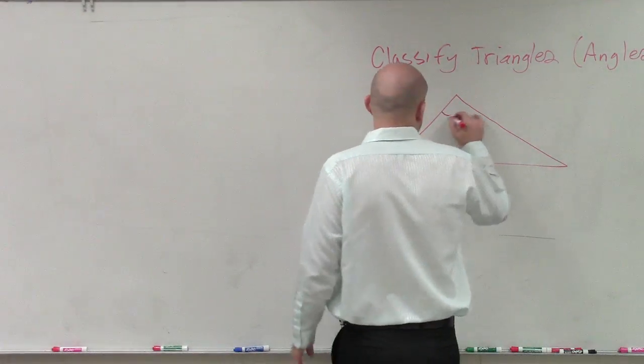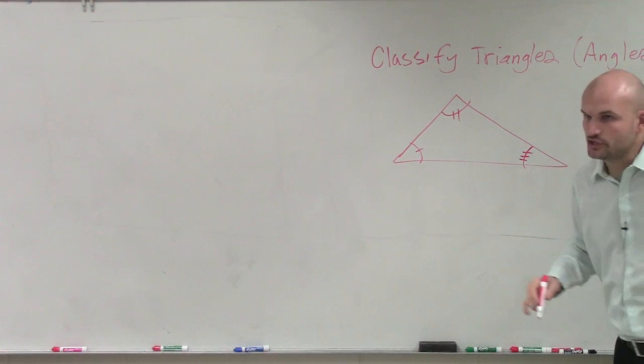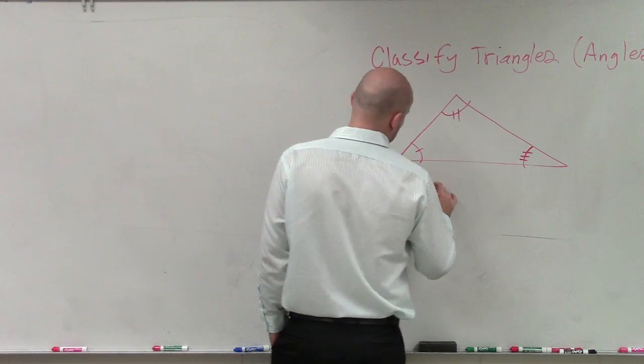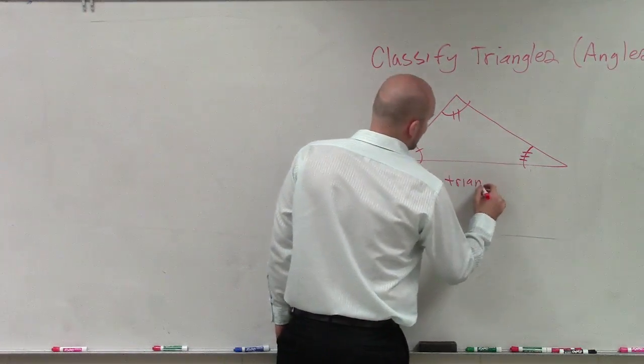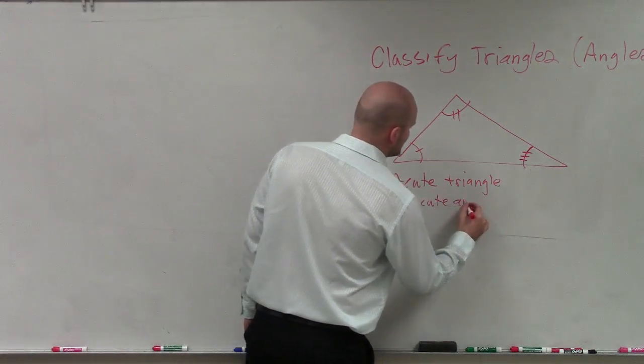Well, if we have one acute angle, two, and three acute angles, we call it an acute triangle. And an acute triangle has three acute angles.